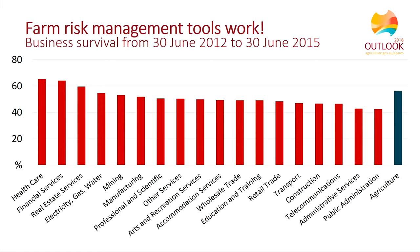We know that business survival is actually higher than the rates shown on the chart, because ABNs can change for a variety of reasons, not just the closure of a business. Probably more important than business survival, farm households on average have greater wealth than households in the broader population, and many farm households have the same or similar income to comparable households in the broader population. Overall, the evidence suggests that the risk management tools Australian farmers are currently using are working pretty well.